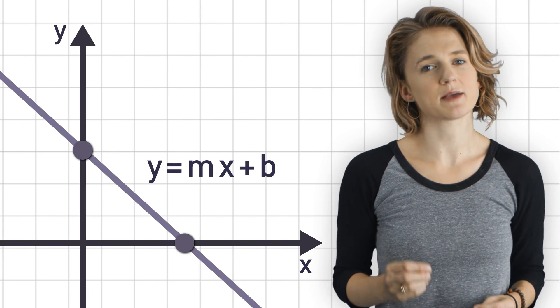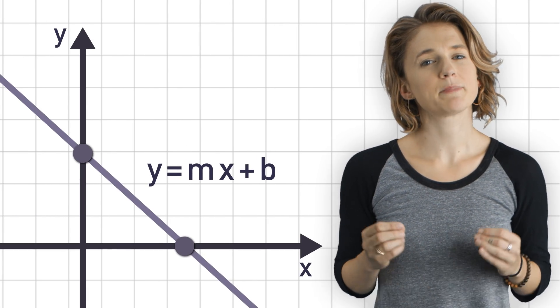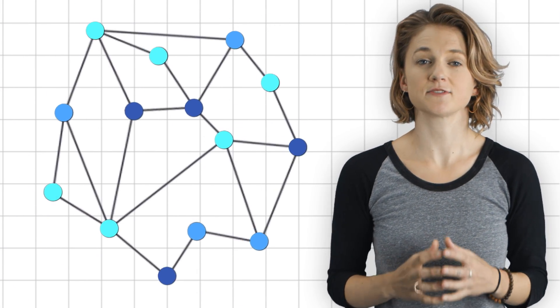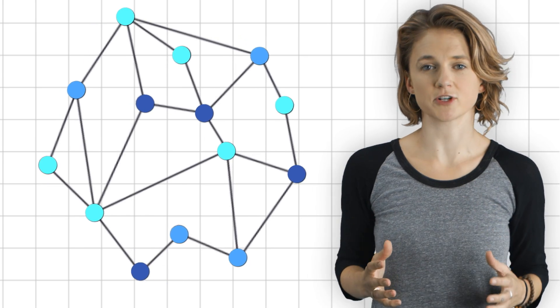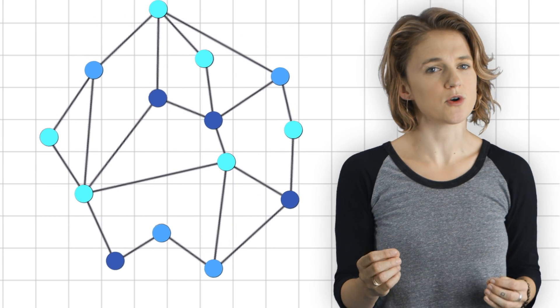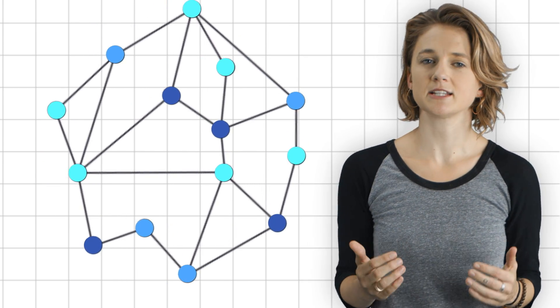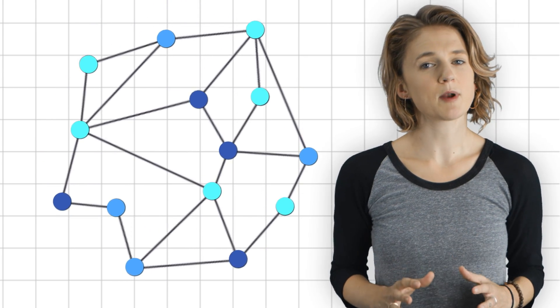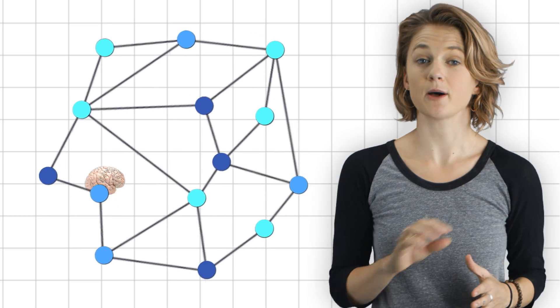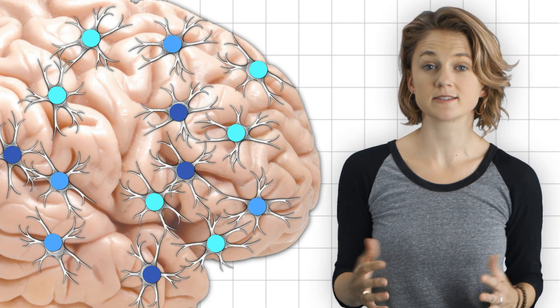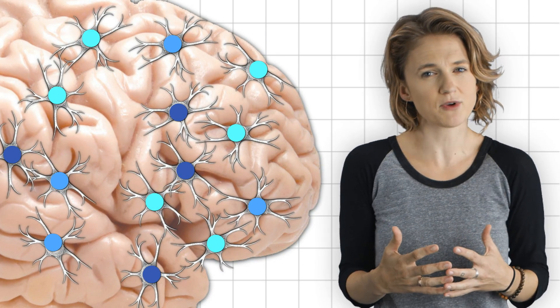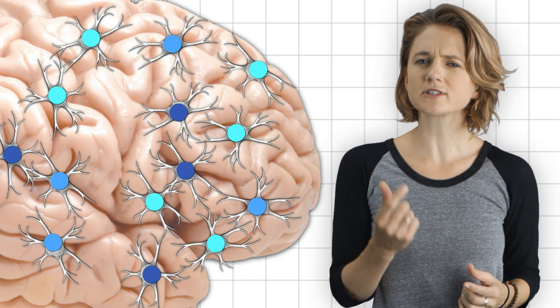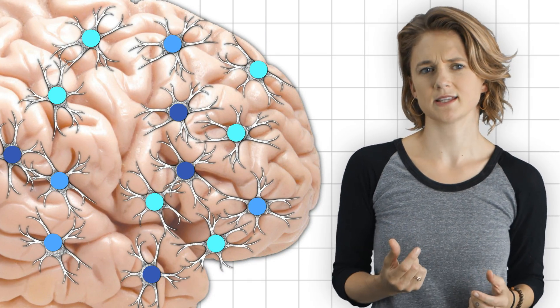Not a graph like y equals mx plus b, but a graph in the sense of a collection of vertices, or nodes, connected by edges. The graph will represent the connections among neurons, the activity of the brain, over a little time slice.